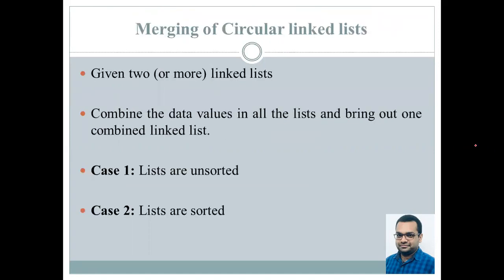Now we'll be talking about the merging of the circular linked list, wherein we are given two or more circular linked lists. The idea is that we have to merge two or more linked lists and the resultant linked list contains the data values from all the linked lists. There may be two cases: the lists may be unsorted, or the lists may be sorted.